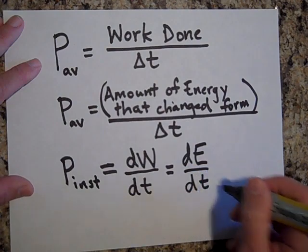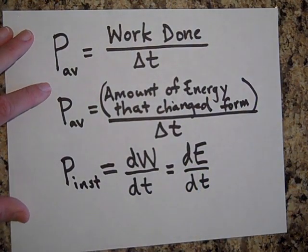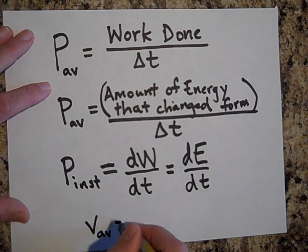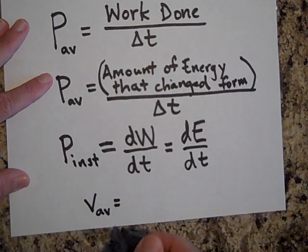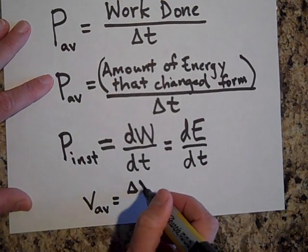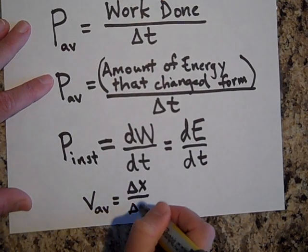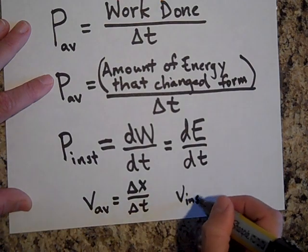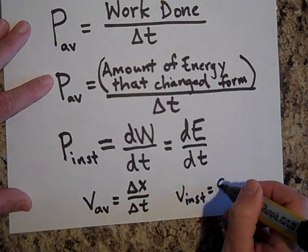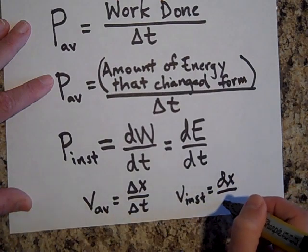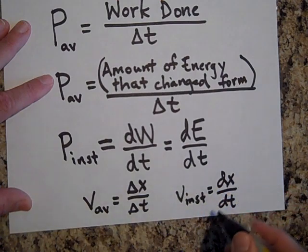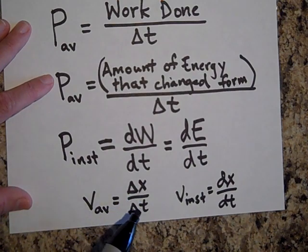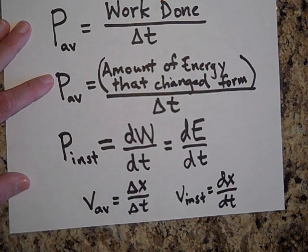If you're wondering where I got those from, well, you know how V average is delta x over delta t. Well, V instantaneous is dx/dt. Another way of saying that is the limit as delta t goes to zero of delta x over delta t.